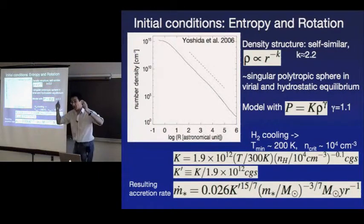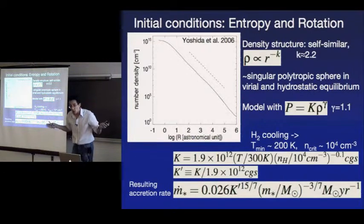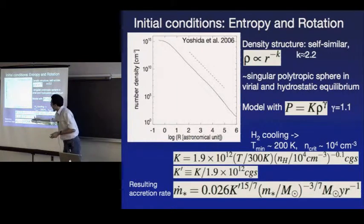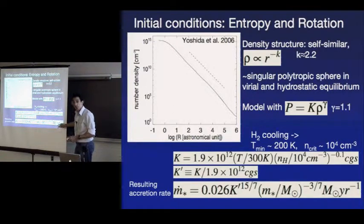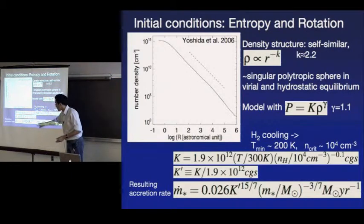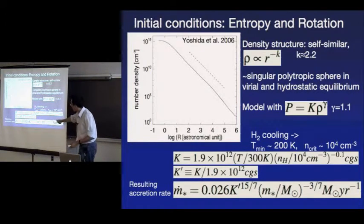The higher the value of K', the denser the structure — higher temperatures and entropy at the point of collapse mean you can support a denser structure, which for a given enclosed mass collapses at a faster rate. For typical values with K' = 1, when the collapsed mass is about 1 solar mass, you're having accretion rates of a few hundredths of a solar mass per year, declining over time. The SHU solution gives a constant accretion rate, but for this steeper density profile, we have a declining accretion rate, giving this minus three-sevenths power.